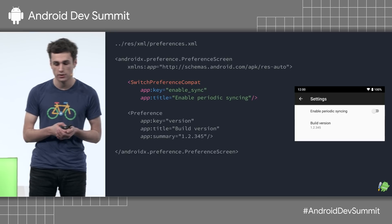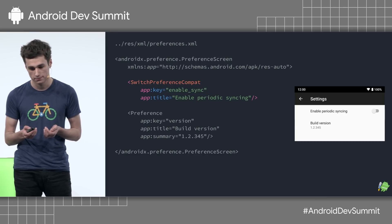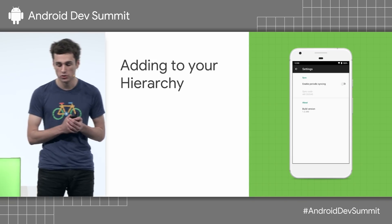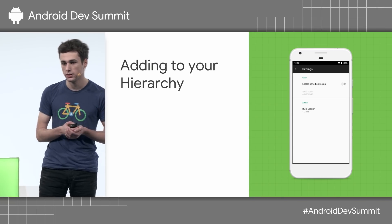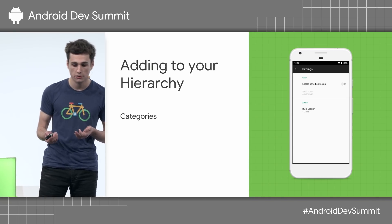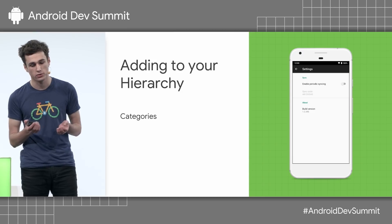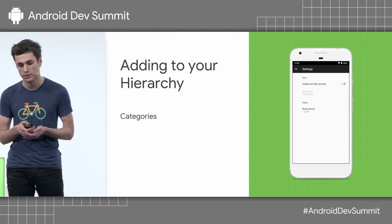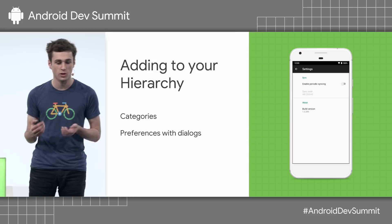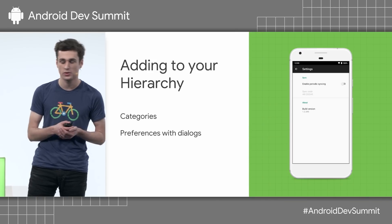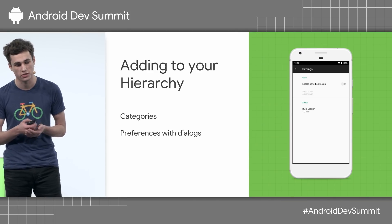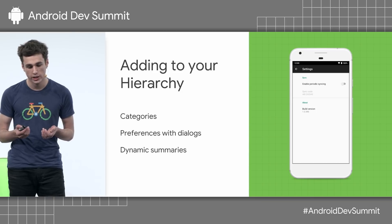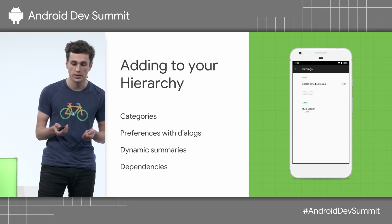Now that we've built the simple hierarchy, I'll show you some other useful features we can add to make this even better. Here's the hierarchy we're going to end up with — there's quite a lot more going on here, so we're going to take it step by step. First, I'm going to cover categories, which allow you to visually split up a complex screen into groups of similar preferences. Then preferences that open dialogs, which allow for more complex configuration than just a simple Boolean switch. I'm going to talk a bit about dynamic summaries and also cover dependencies.